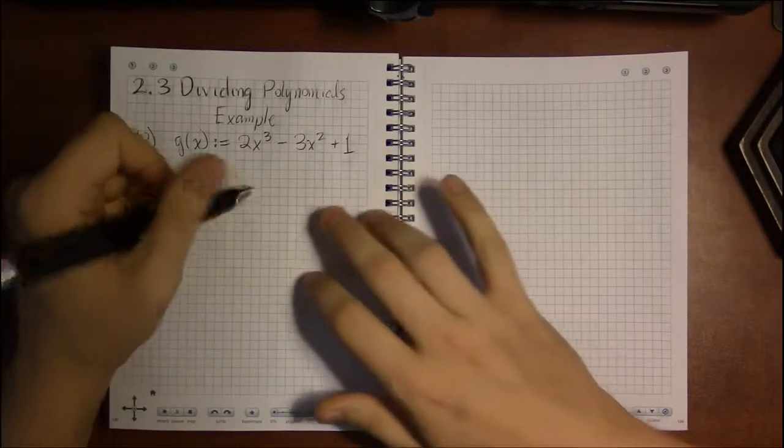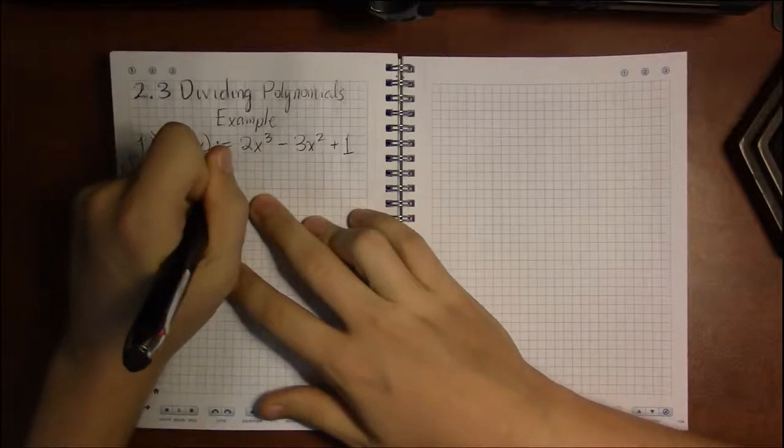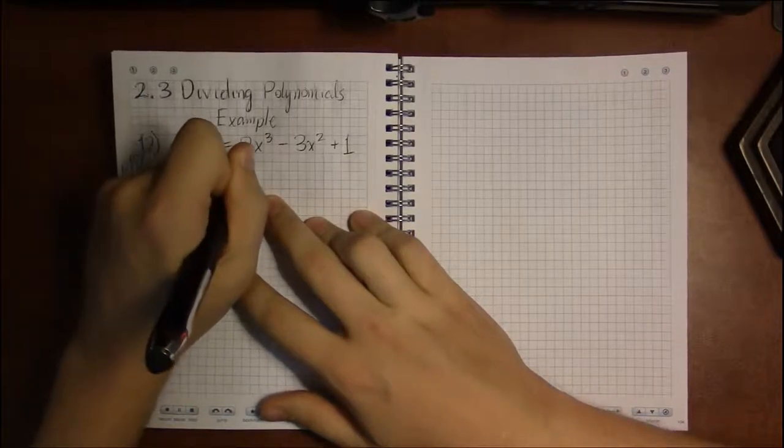So we need a placeholder here. We need to rewrite this polynomial so it has an x term.